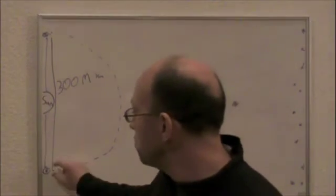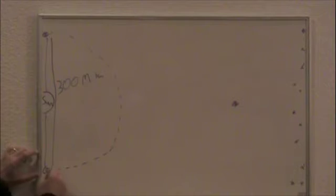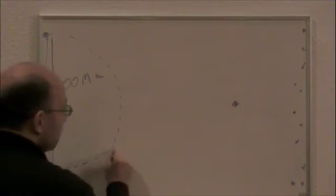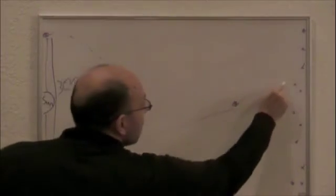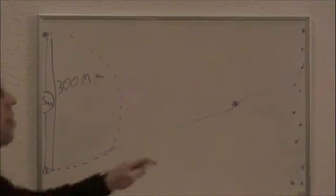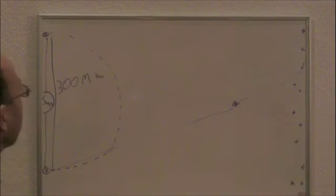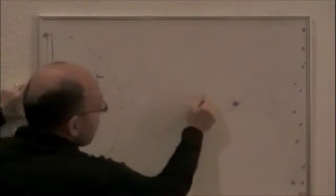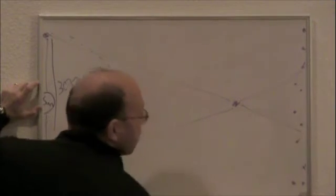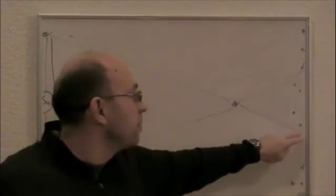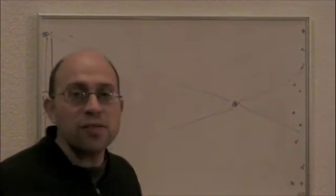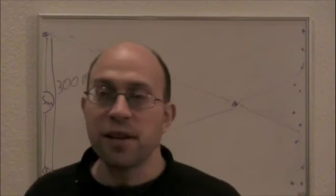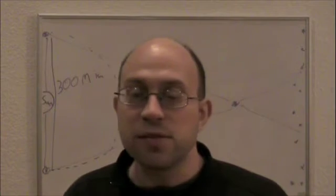So if we take a picture from the Earth at this time of year of a nearby star, that star looks to be just in front of a certain background star. But if we wait six months and take a picture from the other side of the orbit, now the same star looks to be in front of different background stars. And so that's a measurable shift — we've expanded our baseline dramatically just by waiting six months.